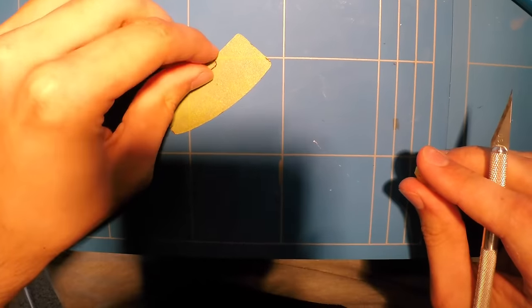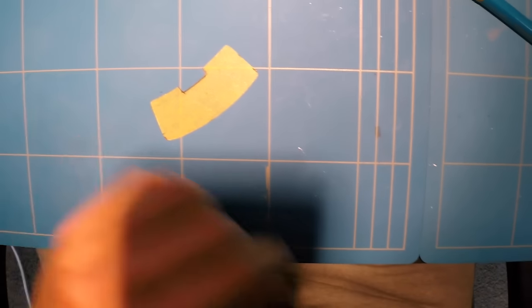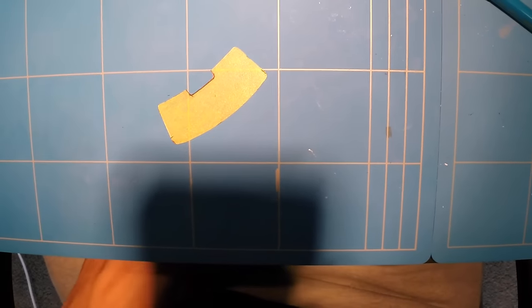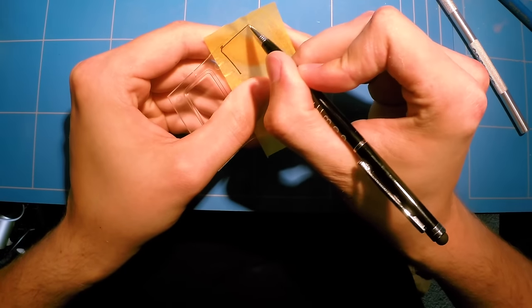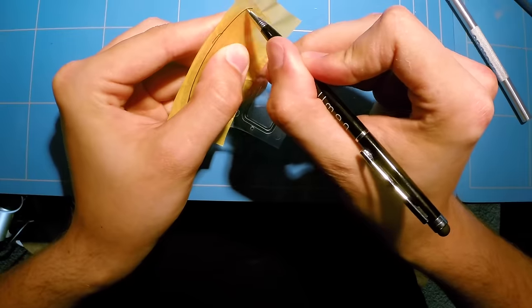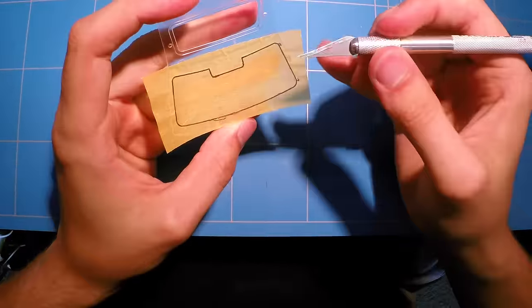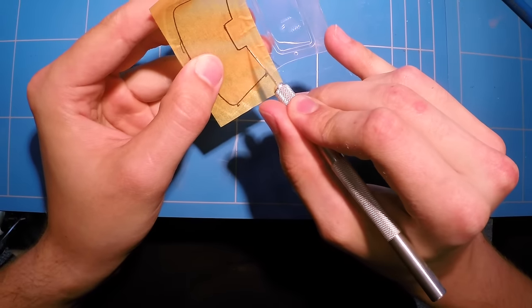And now you're pretty much left with a perfect template that should fit onto your window without any problems and mask off the areas you don't want painted black. But there is also another option you have, and that is by again tracing the line on the masking tape and instead of taking the masking tape off you just cut it directly onto the clear parts.